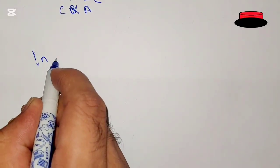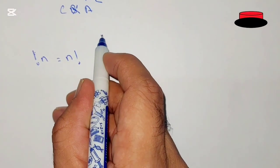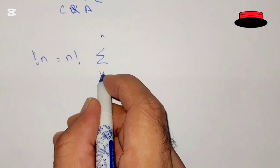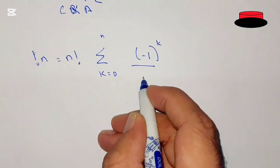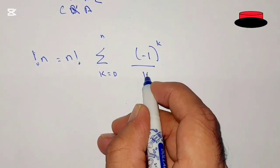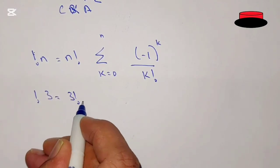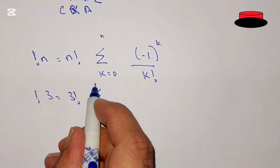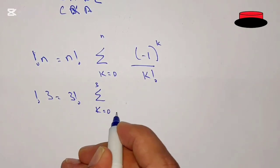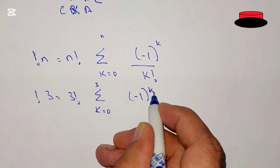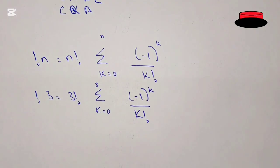The sub factorial of n is equal to n factorial times the sum from k equal to 0 to n of minus 1 to the power k divided by k factorial. So here, sub factorial 3 equals 3 factorial times the sum from k equal to 0 to 3 of minus 1 to the power k divided by k factorial.